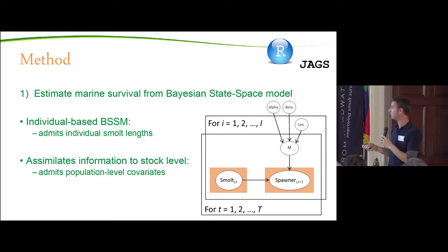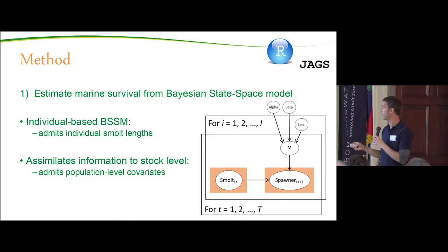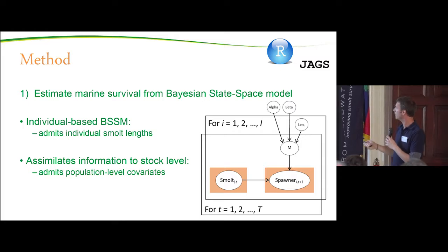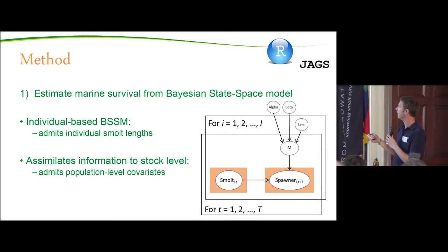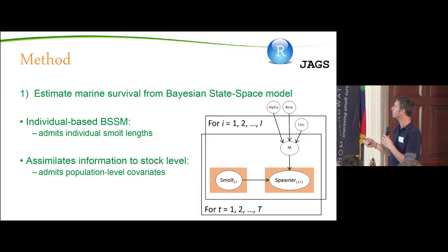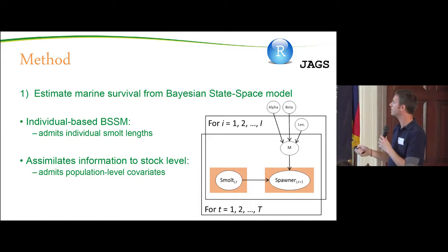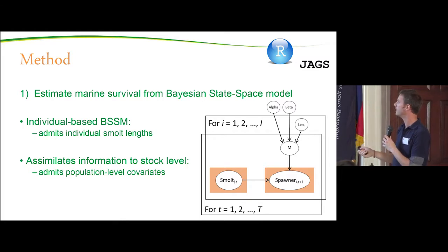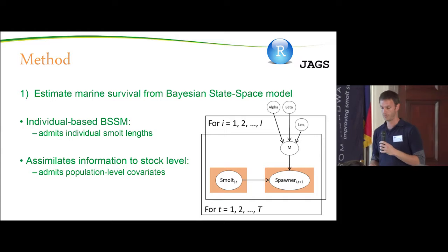The model integrates information to the stock level: we have smolts becoming spawners, with marine mortality parameterized at both the individual and population level. Length is measured for each individual i, and we also have a time component t, running the model over various time periods.